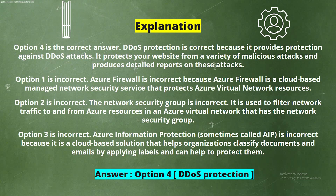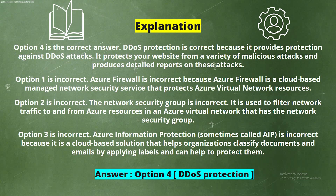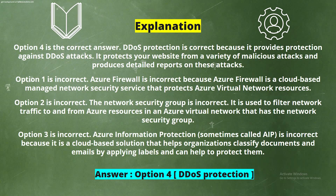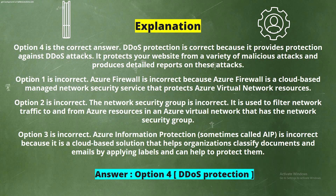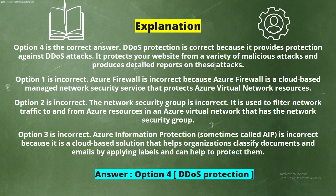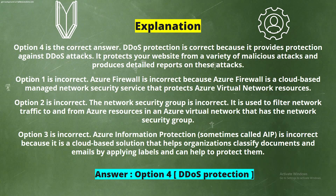Option 1 is incorrect. Azure Firewall is a cloud-based managed network security service that protects Azure virtual network resources. Option 2 is incorrect. The Network Security Group is used to filter network traffic to and from Azure resources in an Azure virtual network. Option 3 is incorrect. Azure Information Protection is a cloud-based solution that helps organizations classify documents and emails by applying labels and can help to protect them.